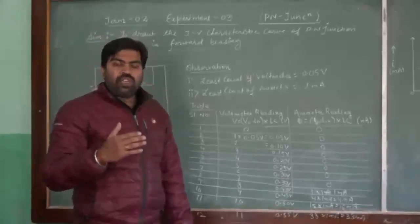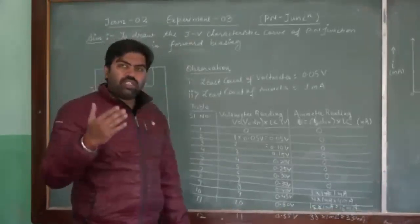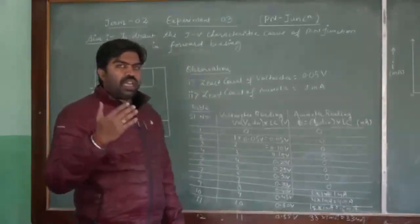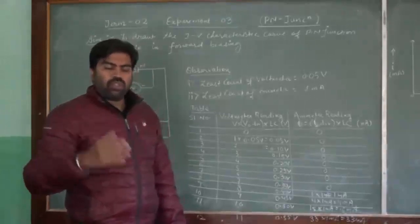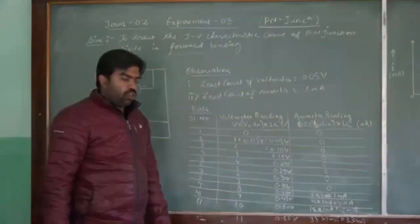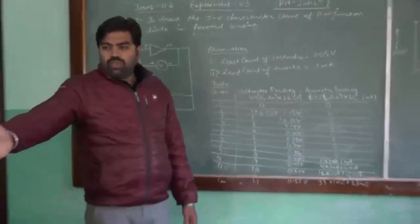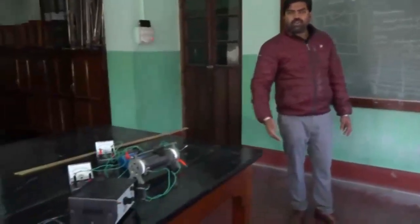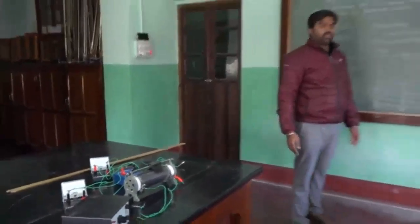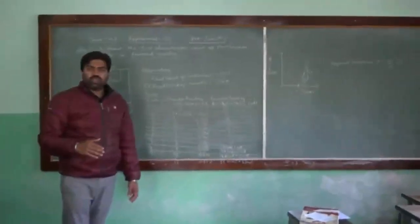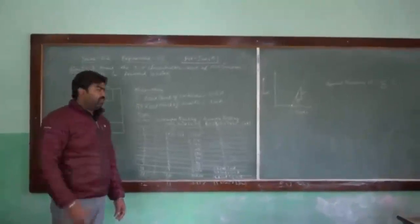Generally, the knee voltage for silicon is 0.7 volt, and for germanium it is 0.3 volt. The material we have used for making our P-N junction diode is germanium, because its knee voltage is approximately 0.35 volts.